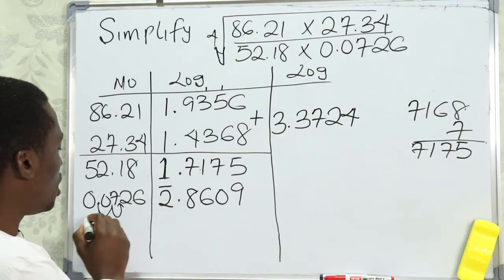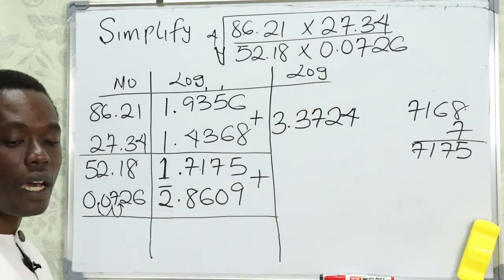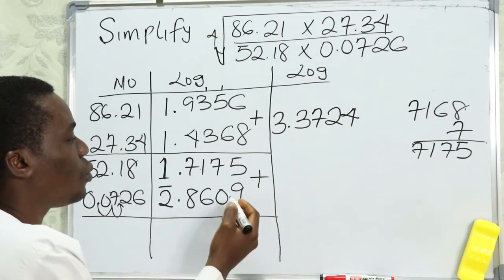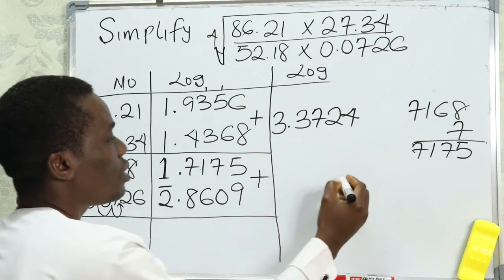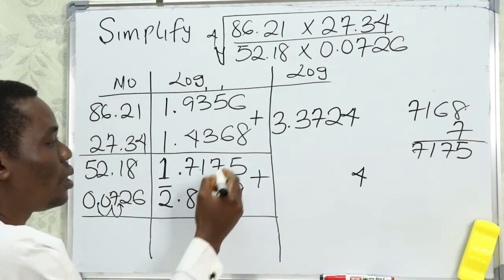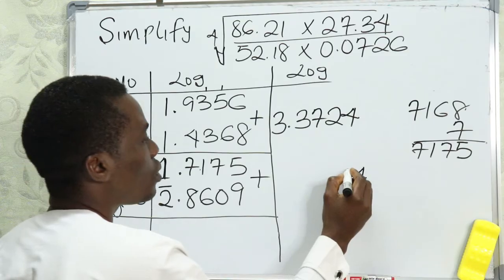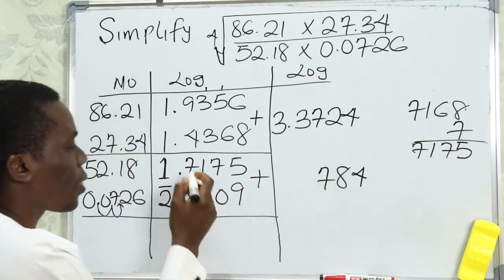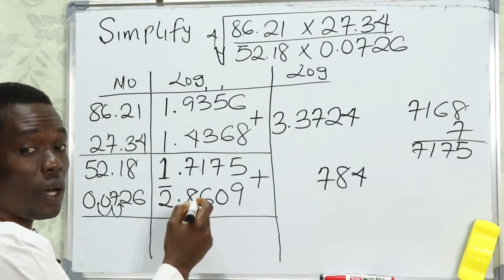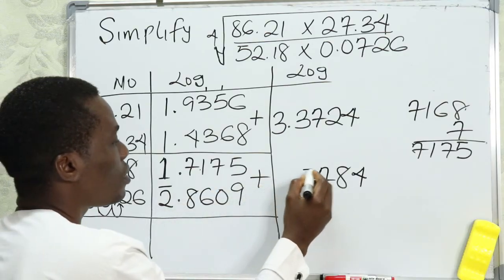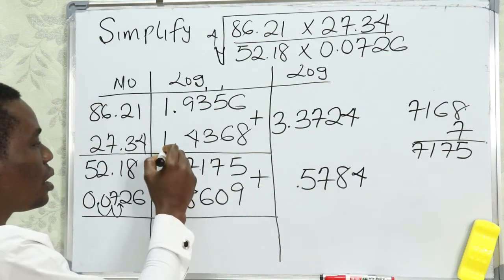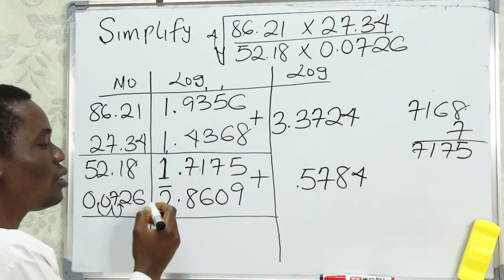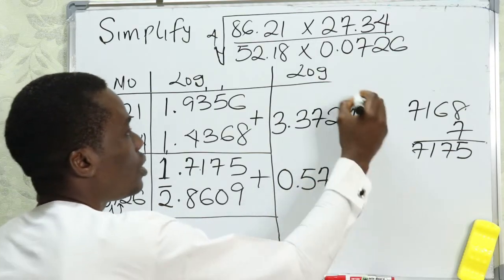Adding the denominator logs since they are multiplied: 5 plus 9 is 14, write 4, carry 1; 7 plus 6 is 13... we continue the addition. For the characteristics: 1 plus negative 2 gives negative 1, but we have 2 minus 2 which gives zero. So the total log for the denominator is 0.5784.